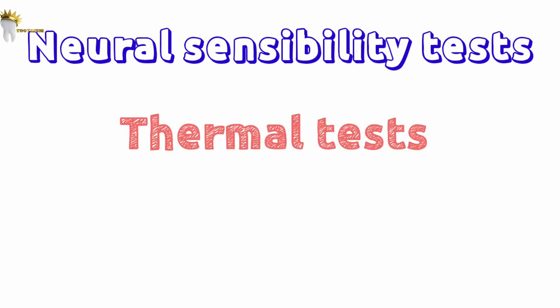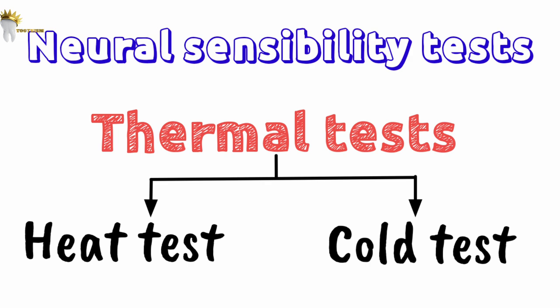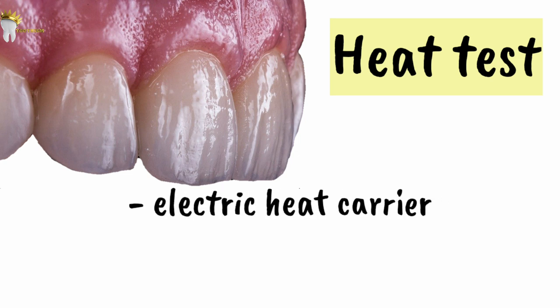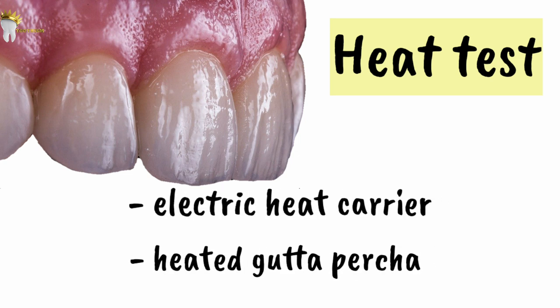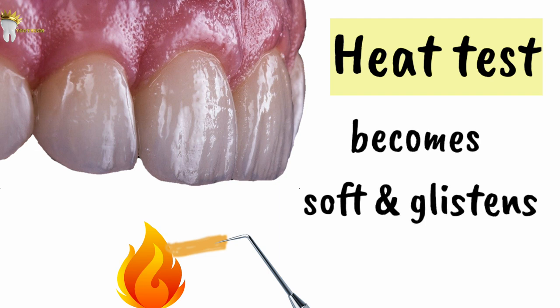The first neural sensibility test is the thermal test. We apply heat or cold to the tooth and check for sensitivity. The tooth to be tested is first dried and Vaseline is applied. To apply heat, we can use an electric heat carrier or a heated gutta-percha stick. With the electrical heat carrier, we have the option to control the temperature. For gutta-percha, it is heated using a naked flame or electrical heater until it becomes soft and glistens — it softens at 65 degrees Celsius.